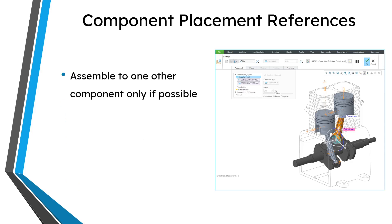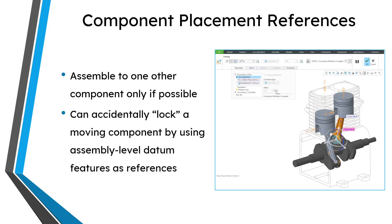Just like with your static components, if you can assemble a moving component to only one other component in the assembly, do that if you can. One thing to be aware of, especially with mechanisms, is that you can accidentally lock a moving component if you use the wrong assembly-level references. For example, if you use assembly-level datum features as references for assembling the component, sometimes you might get a lock and an error message about not being able to satisfy some settings. Rather than assembling a moving component using your assembly datums, you're definitely better off using geometry references from an actual physical part inside the assembly.